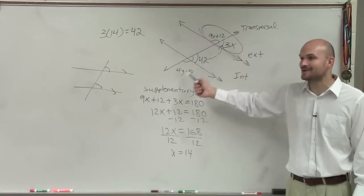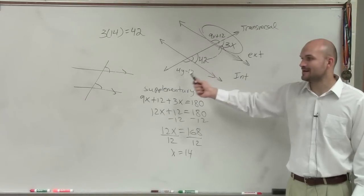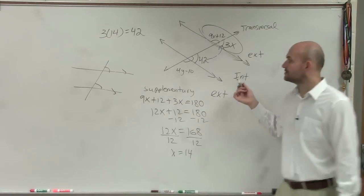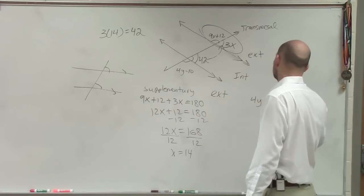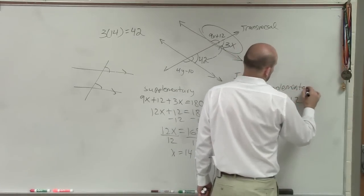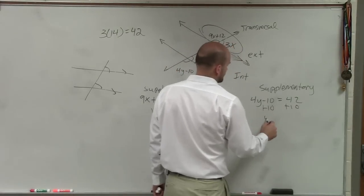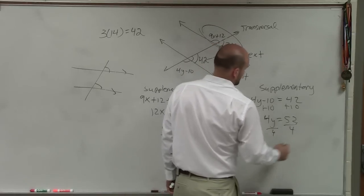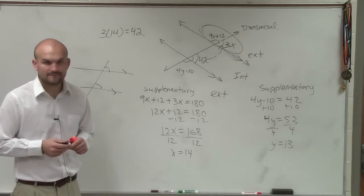Anybody who wants to raise their hand — how are these two angles related to each other? They make up a line, so they're supplementary. Therefore I can write the equation: 4y minus 10 plus 42 equals 180 — wait, they're supplementary. So now I solve, and there you go. Now I've solved for both x and y.